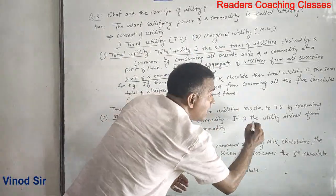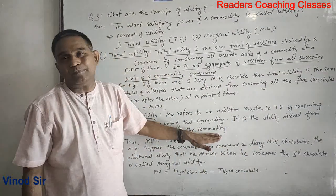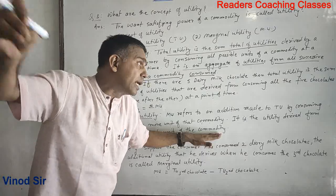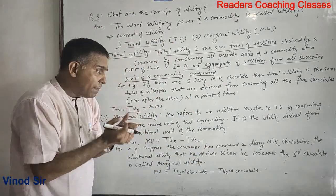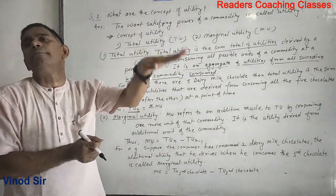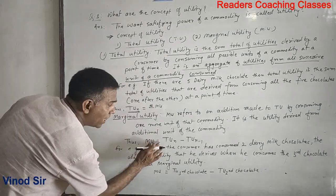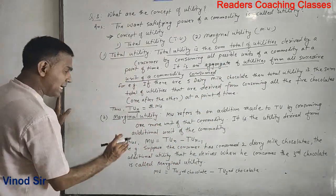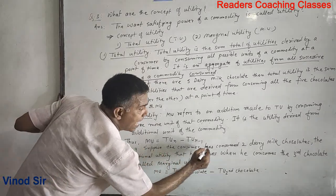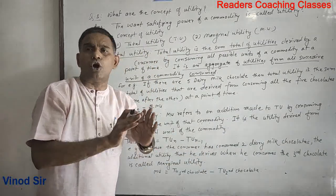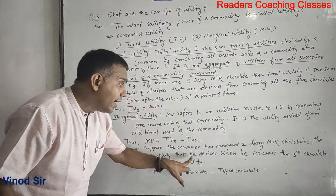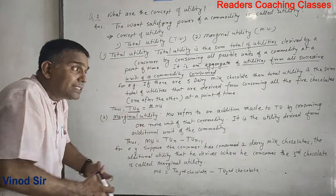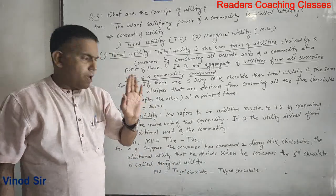The marginal utility of a unit equals the total utility of that unit minus the total utility of the previous unit. For example, if the consumer has consumed two dairy milk chocolates, the additional utility that he derives when he consumes the third chocolate is called marginal utility.